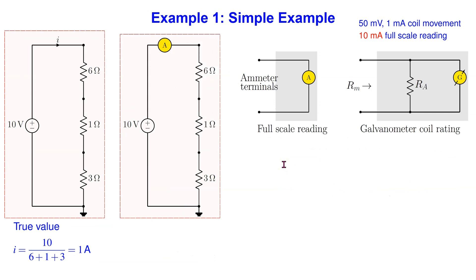Let us consider a simple example. Consider a circuit with three series resistors as shown. Suppose we are interested in measuring the current I. Using Ohm's law, it is very easy to show that the true current value is 1 amp. In order to measure this current, we must interrupt the circuit and connect an ammeter in series as shown here.